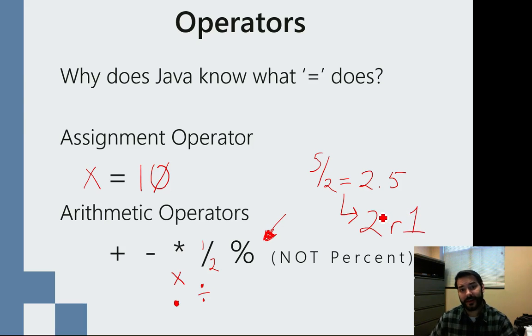The same thing actually comes into play when we start to look at modulus. We would say something like 5 modulus 2. What we're saying is what is the remainder that would happen if I did 5 divided by 2. What is my remainder? In this case, it would be a 1.